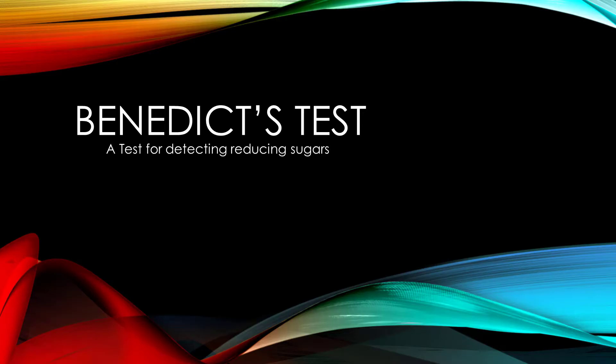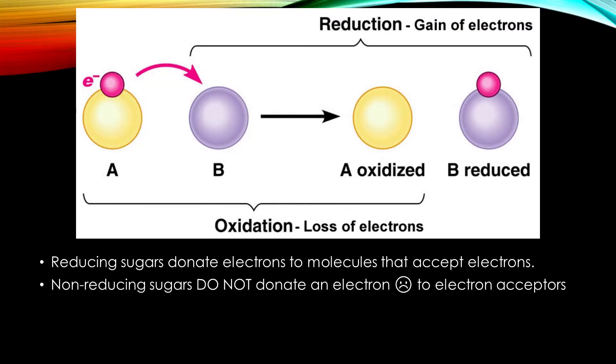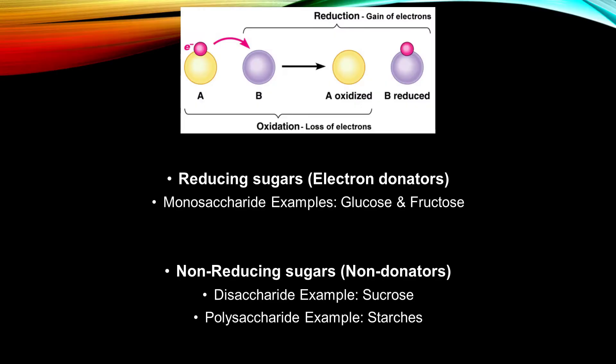Reducing sugars are carbohydrates that are oxidized in the presence of an oxidizing agent. Reducing sugars donate electrons to molecules that accept electrons. Some reducing sugars include monosaccharides like glucose and fructose, and some disaccharides like lactose and maltose.